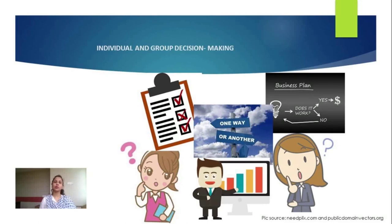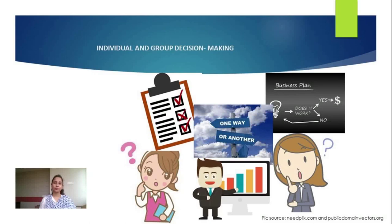An organization is a group of people working together to achieve certain objectives. This group consists of superiors and subordinates occupying different positions in the organization, each with their respective duties and responsibilities. In their respective capacities, they make decisions keeping in mind the organizational objectives. As a decision maker, the manager may make decisions individually or ask subordinates to participate in the decision making process.